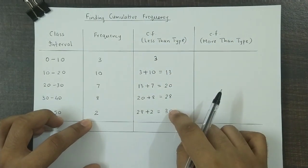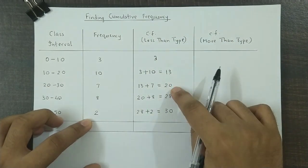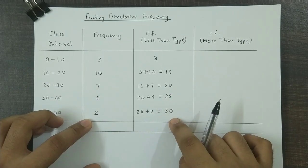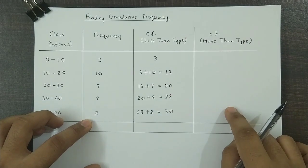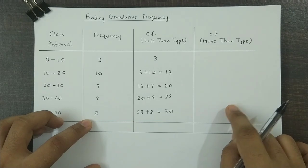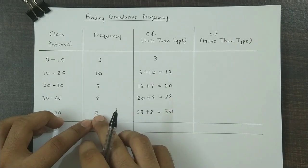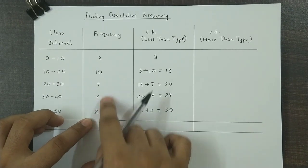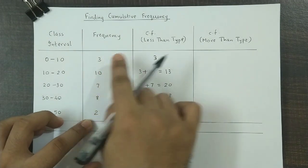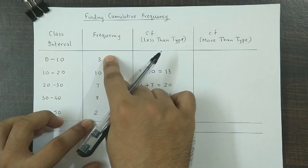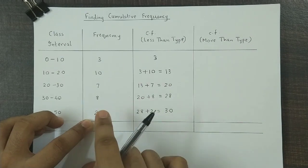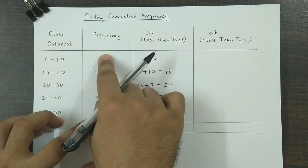So these are the less than type of cumulative frequencies: 3, 13, 20, 28, and 30. Now we move to more than type cumulative frequencies. Here we add the frequencies starting from the last frequency and we go upwards. For less than we move downwards, and for more than we move upwards, adding the frequencies upward.